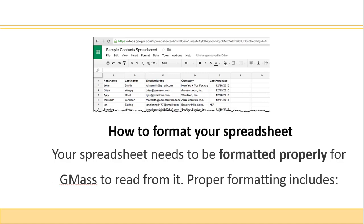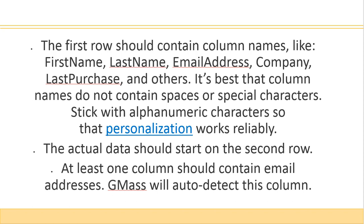Here's how to format your spreadsheet. Your spreadsheet headers need to be formatted properly for GMAS to read from it. Proper formatting includes having the first row contain headers like first name, last name, and email address. It's best that the column names do not contain spaces or special characters — stick with basic alphanumeric characters so that personalization will work reliably. The actual data will start on the second row. At least one column should contain an email address and GMAS will auto-detect this column.